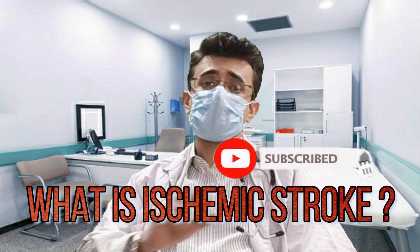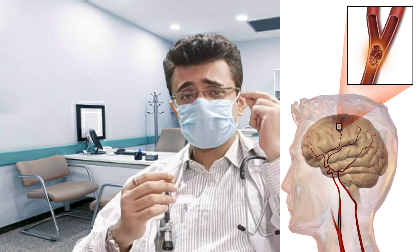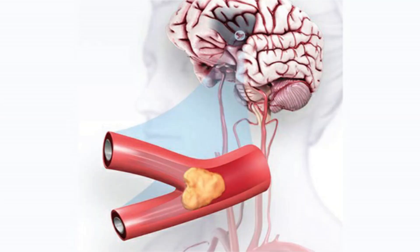Among all stroke cases, 87% are ischemic strokes. This occurs when a blood clot breaks off from elsewhere in the body and travels to the brain to block small arteries, causing lack of blood supply and death of brain cells — commonly called embolism. People with uncontrolled high blood pressure, high cholesterol, coronary artery disease, diabetes, or sickle cell disease are more prone to developing ischemic brain stroke.